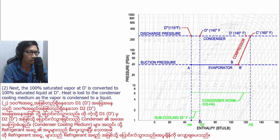Number two: next, the 100% saturated vapor at D1 is converted to 100% saturated liquid at D2. Heat is lost to the condenser cooling medium as the vapor is condensed to a liquid.